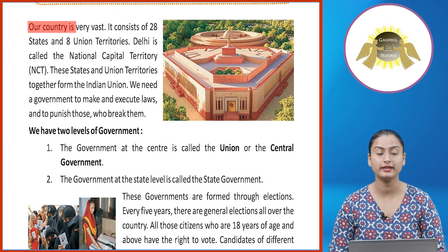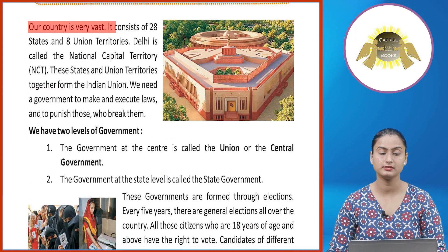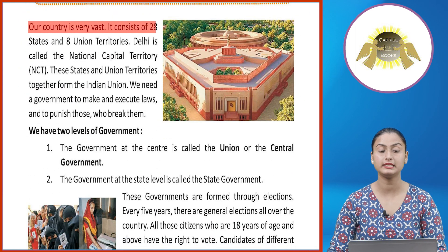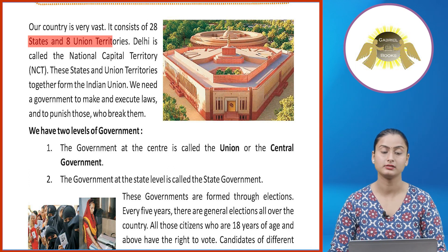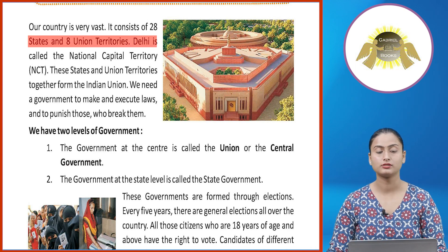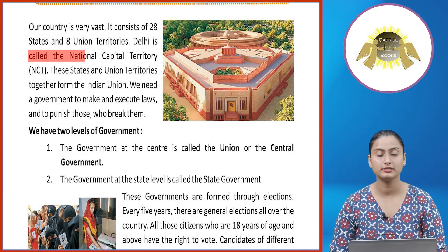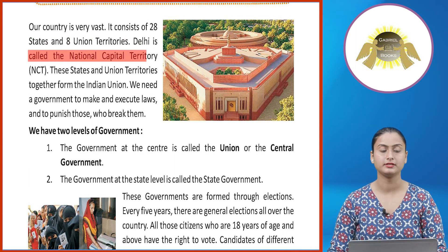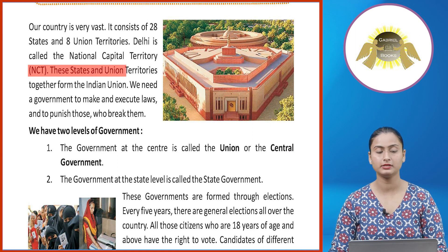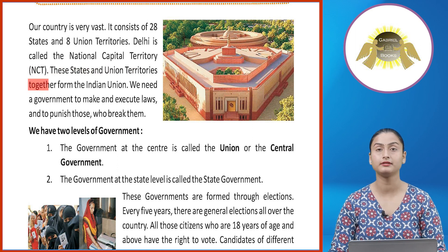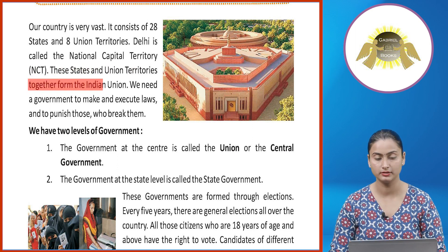Our country is very vast. It consists of 28 states and 8 union territories. Delhi is called the National Capital Territory, or NCT. These states and union territories together form the Indian Union.